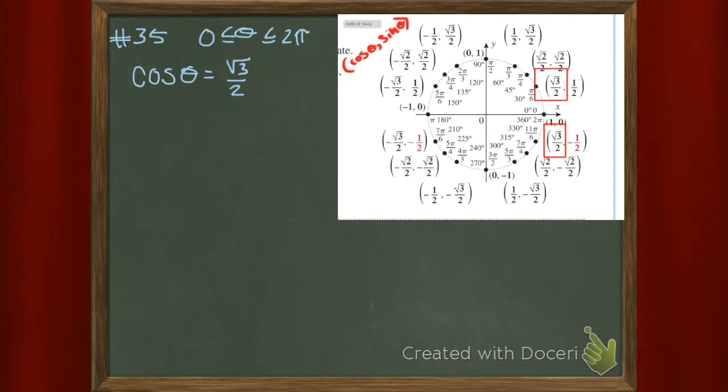Because cosine is governed by x. So what's next? Our answers are the corresponding radian measures. That's why theta is pi over 6 and 11 pi over 6.